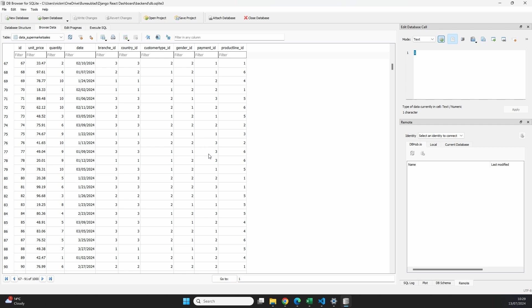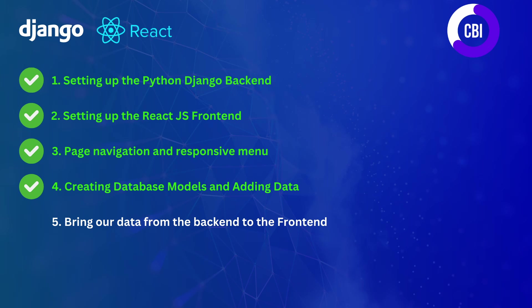And just like that, we have enough data inside our database to start visualizing it in the next few videos. In this video I showed you how to create your database models and how to import data into your database for this specific use case. In the next video we're going to continue and make sure that we can bring this data from our backend to our frontend with an API — covering both setting up the backend correctly and setting up an Axios instance to bring it to the frontend. I hope you enjoyed this video — please leave a like and subscribe, and I hope to see you in the next one.